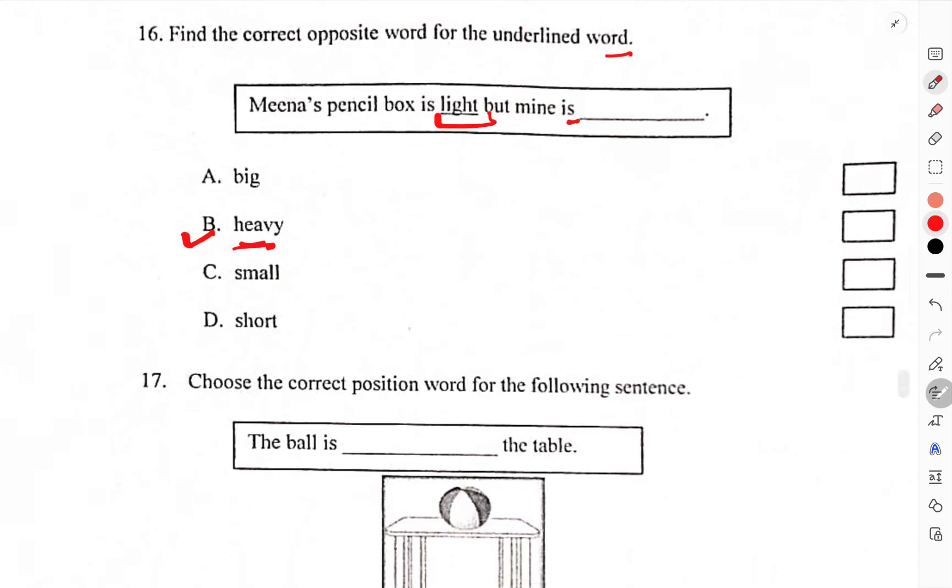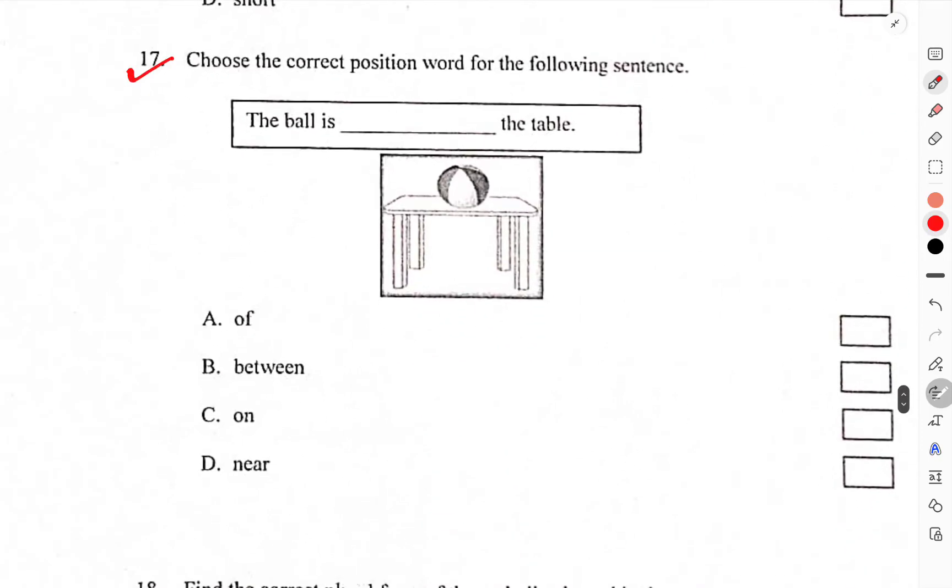Choose the correct position word for the following sentence. The ball is on the table. On should be the correct.